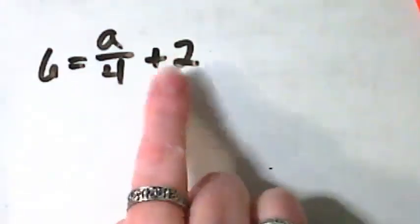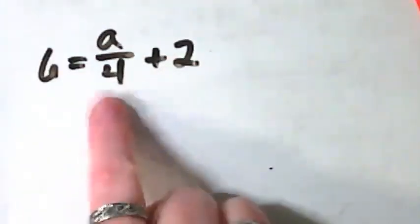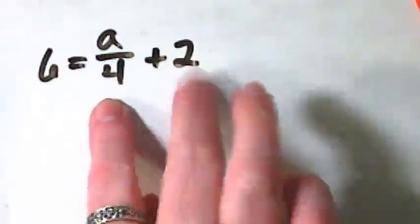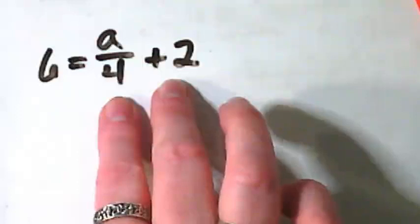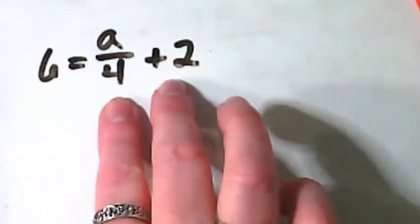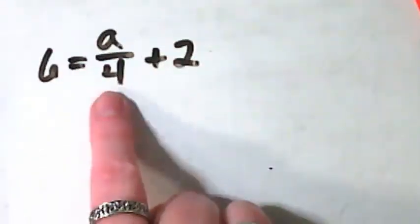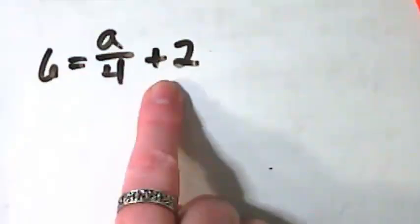You see the addition/subtraction right here? This is the multiplication/division. Both of these things are on the side of the equal sign with the variable, and we always want to start with the number that's not connected to the variable. The variable is in the fraction or the division part, so we're going to start with the two.